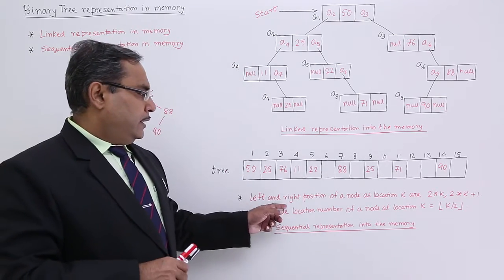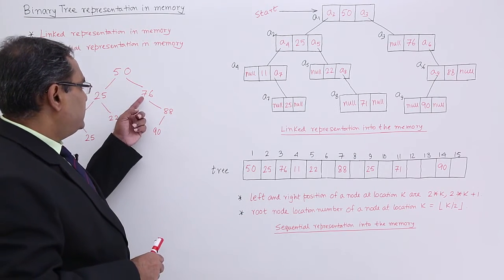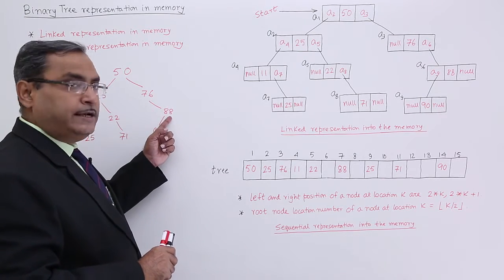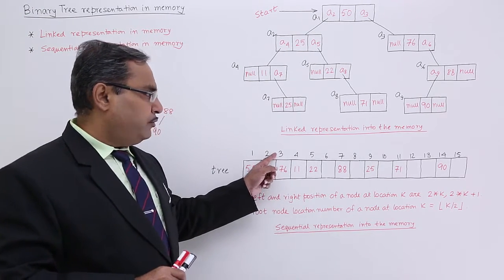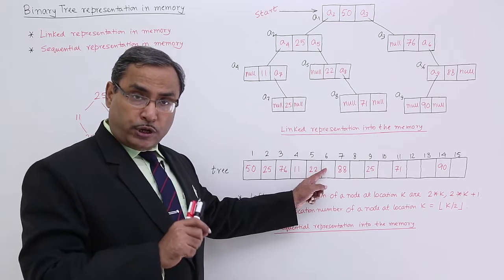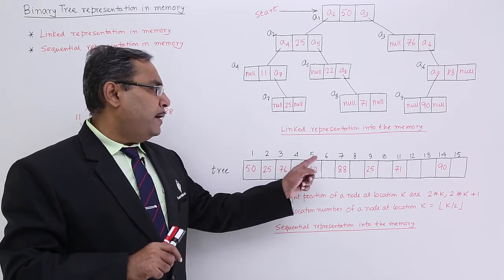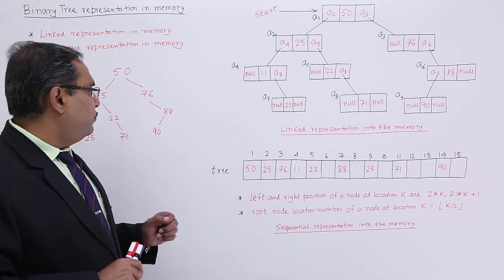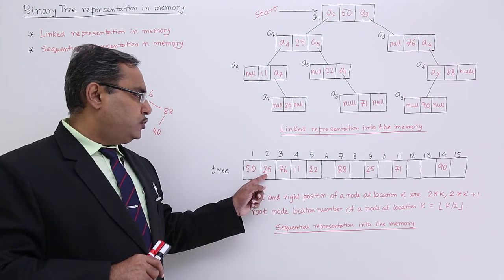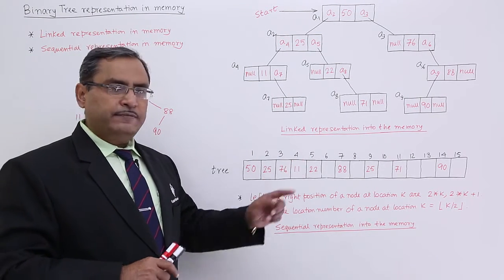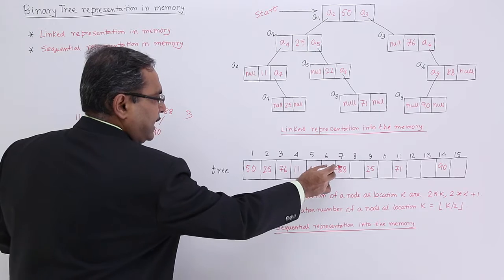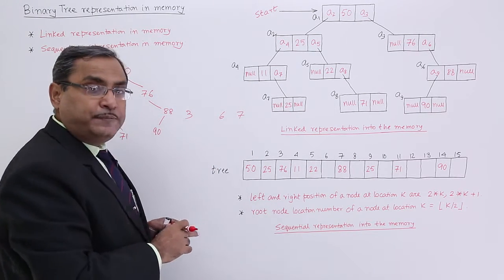Here are two important points. Node 76 is at location 3, having a blank left child and right child 88. The right child is at location 7, and the left child blank is at location 6. So for a node at position 3, children are at positions 6 and 7. Similarly, node 25 at location 2 has children 11 and 22 at locations 4 and 5. So when the root node is at location k, the left child is at 2*k and the right child is at 2*k + 1.